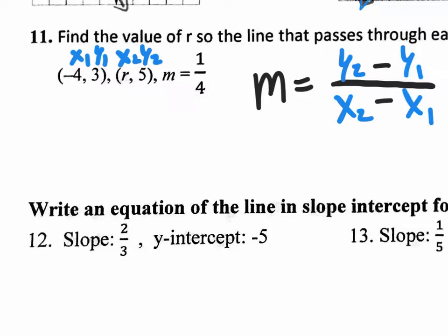Let's rewrite our formula but plugging in our values. Whenever you use a formula, do the subtractions first and then plug in your y2, which is 5, your y1, which is 3, your x2, which is r in this case — let me put that in red so you can see that missing value r. We're going to solve for r right now. And then our x1 value, which is negative 4.